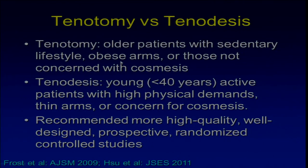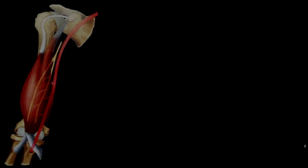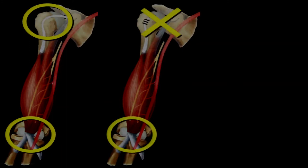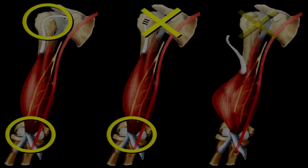Tenotomy is recommended for older patients with a sedentary lifestyle, obese arms where the Popeye sign is not visible, or those not concerned with cosmesis. Tenodesis is recommended for young active patients with high physical demands, thin arms, or concern for cosmesis. The problem is the lack of high-quality studies, and more prospective randomized controlled studies are needed. Personally, I believe tenodesis is better because tenotomy sacrifices function to both joints, while tenodesis preserves elbow function.